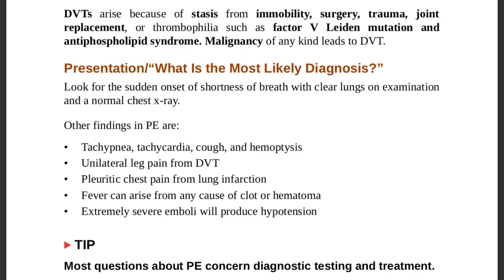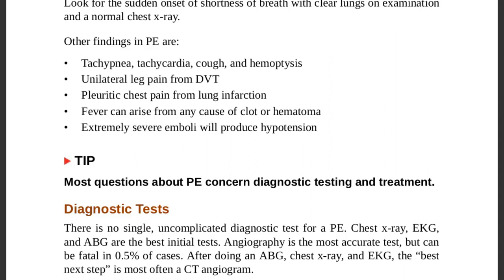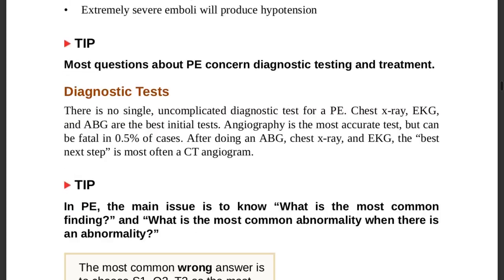There is no single uncomplicated diagnostic test for pulmonary embolism. The best initial tests are chest x-ray, ECG, and ABGs. Angiography is the most accurate but can be fatal in 0.5 percent of cases. After ABGs, chest x-ray, and ECG, the best next step is most often a CT angiogram.